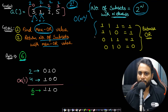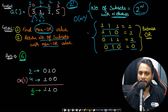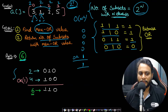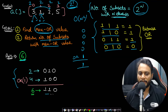A quick recap on bitwise OR: 1 OR 1 is 1, 1 OR 0 is 1, 0 OR 1 is 1, and 0 OR 0 is 0. It doesn't matter how many zeros there are — if you've seen a single 1 and take the bitwise OR, it will always end up as 1. For example, 2 (binary 010) OR 4 (binary 100) gives 110, which equals 6.